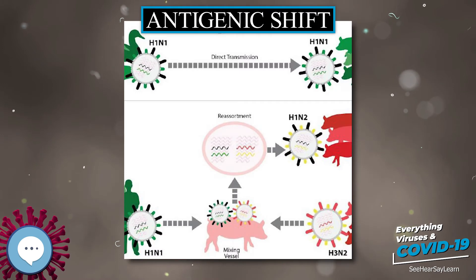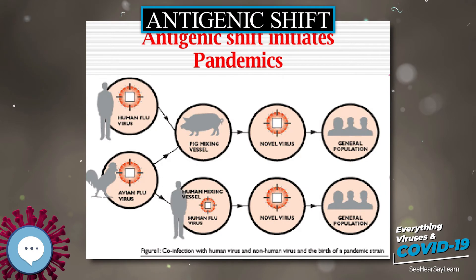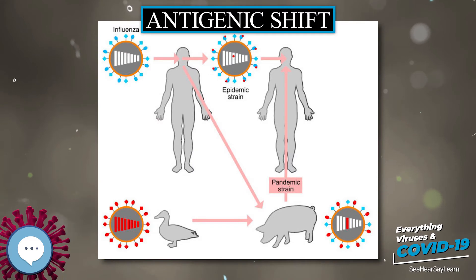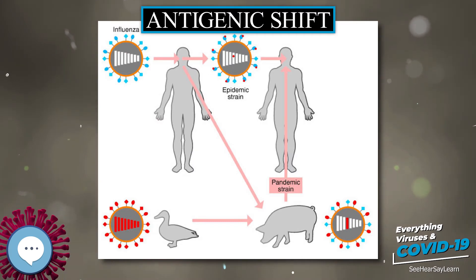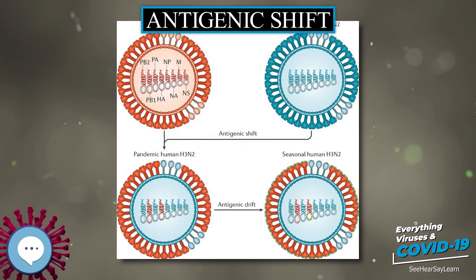Influenza B viruses circulate widely principally among humans, though they have recently been found in seals. Flu strains are named after their types of hemagglutinin and neuraminidase surface proteins, of which there are 18 and 9 respectively, so they will be called, for example, H3N2 for type 3 hemagglutinin and type 2 neuraminidase.